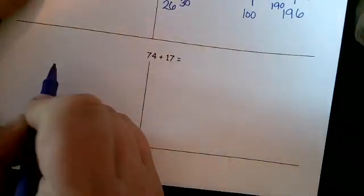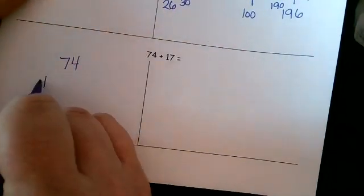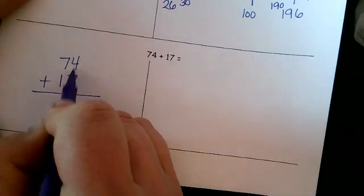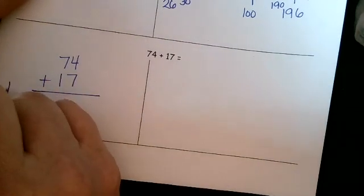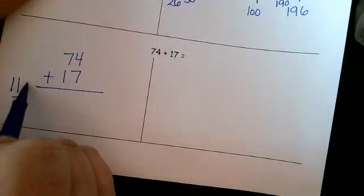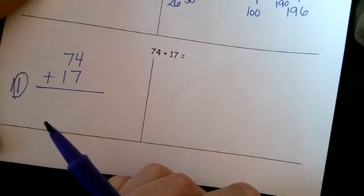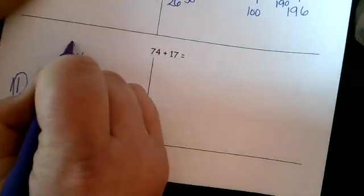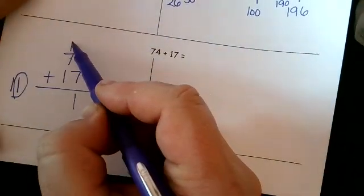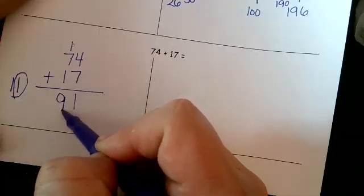One last one. I know this is a long video, but it's for the entire week. Let's just look at this one. 74 plus 17. 4 plus 7, that is 11. Write it off to the side if I still need to. Some of them might not need to do that anymore. 1 goes in the one place. I carry that 10. 7 plus 1 is 8 plus 1 is 9. I got 91.